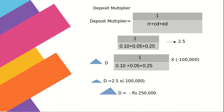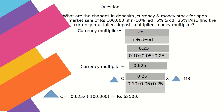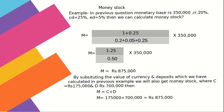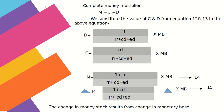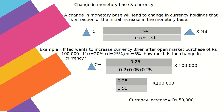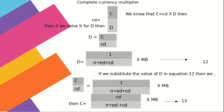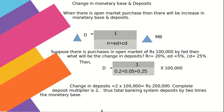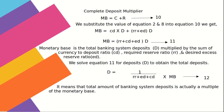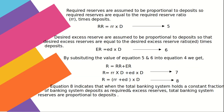Quick revision for this session: we covered deposit multiplier, change in money stock, money multiplier, questions on currency multiplier, and change in money stock. Money stock = currency + deposits. The complete currency multiplier formula is CD / (RR + ED + CD). Monetary base = C + R. Topics included open market purchases, required reserve ratios, and money stock.